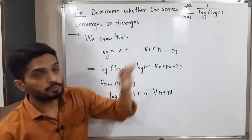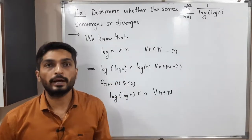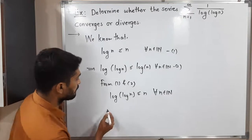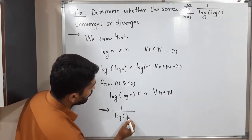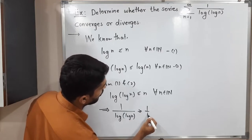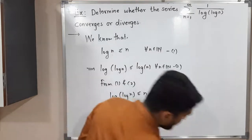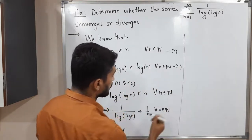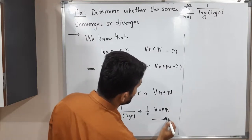After that, we want that term, so I will take reciprocal of both sides. If you take reciprocal, the inequality will get changed. Therefore, 1 upon log of log n is greater than or equal to 1 upon n. This is true for all n belongs to set of natural numbers. I will call this as star.